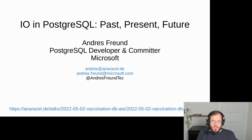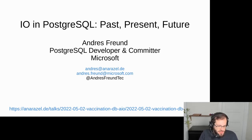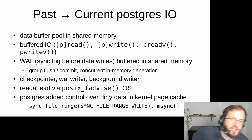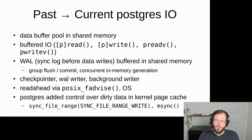I want to talk today about how IO in Postgres works, why it works like that, what the problems are, why we want to change it, and what made us change it right now rather than having done so in the past. I started working on Postgres about 15 years ago and increased it over time. Postgres has a fairly simple design, and the basics have been the same for at least 15 to 20 years.